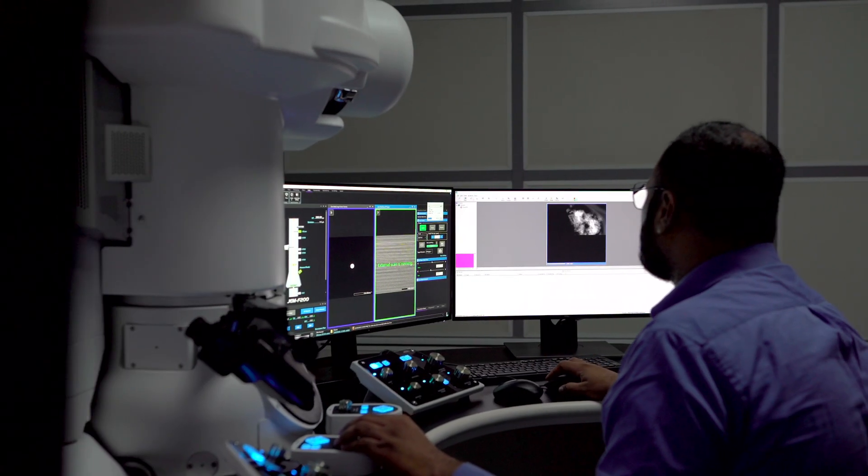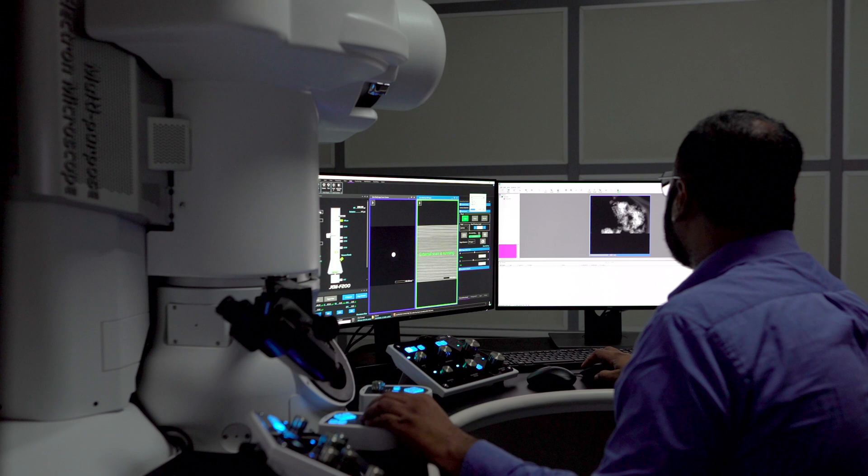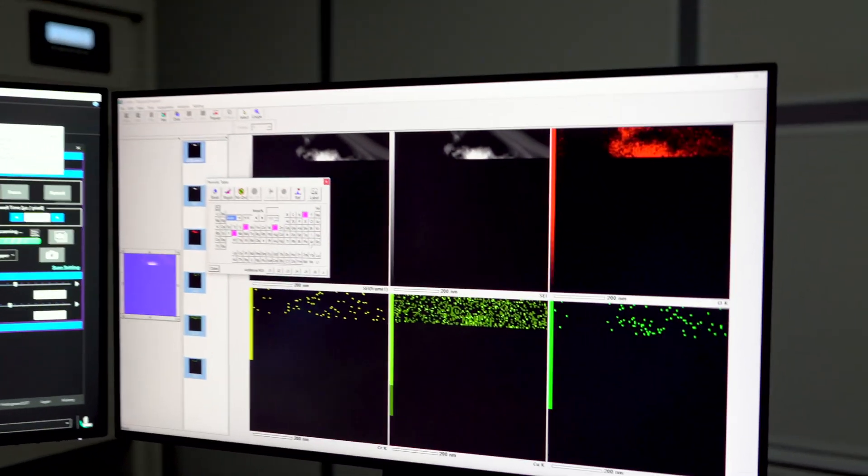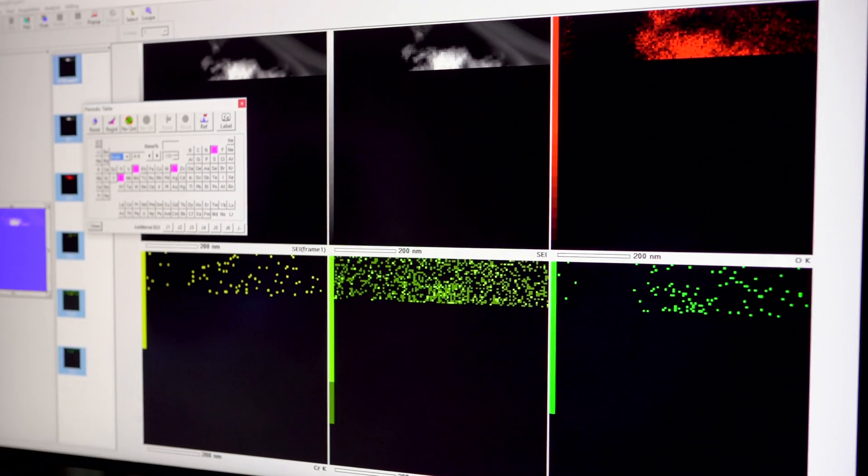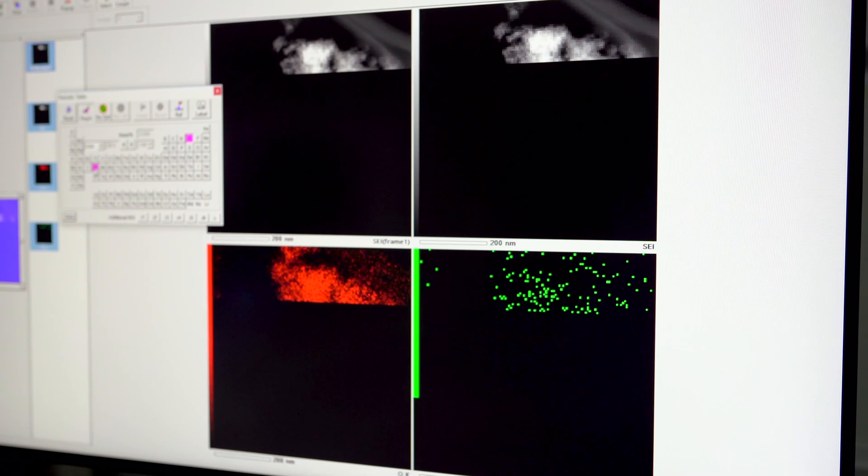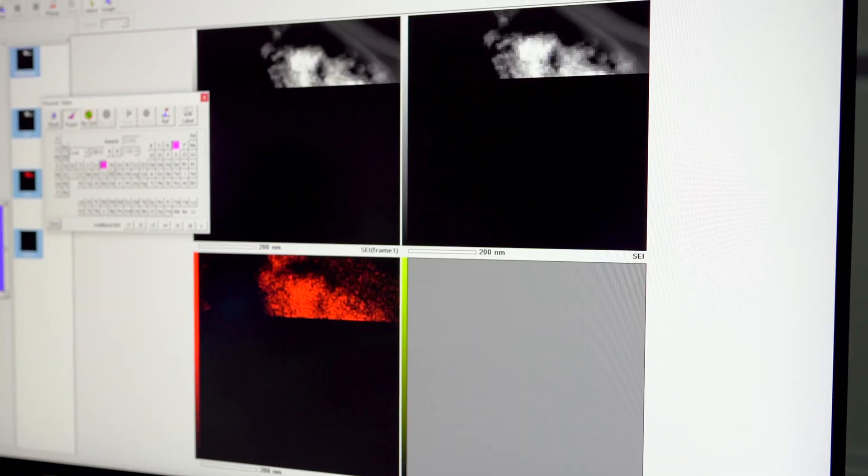When you do that you can actually correlate with each pixel what is the composition associated with the material and then you can get a compositional map. So you get structural and compositional information about your sample by using the transmission electron microscope.